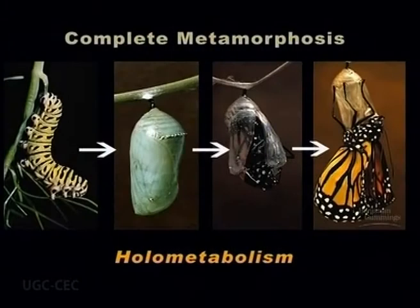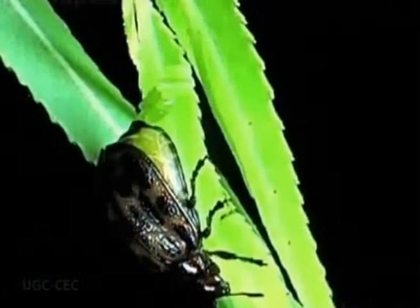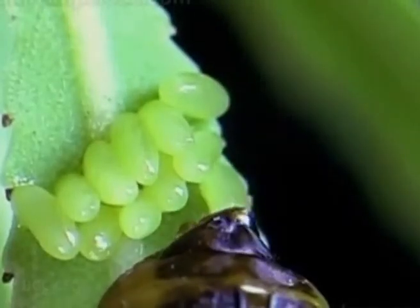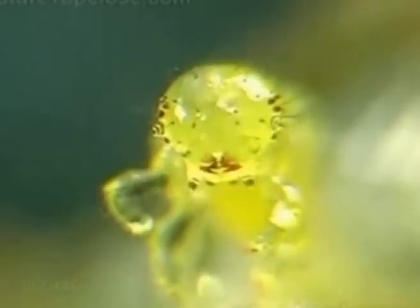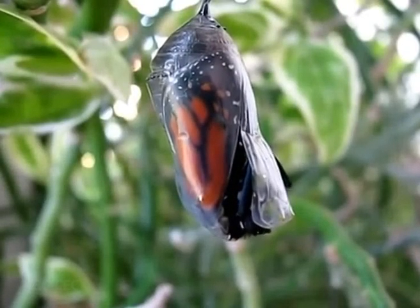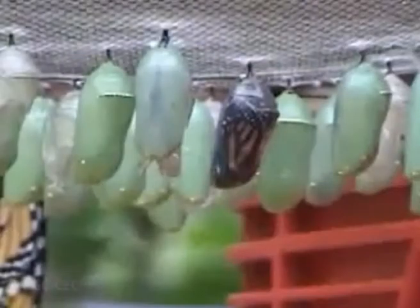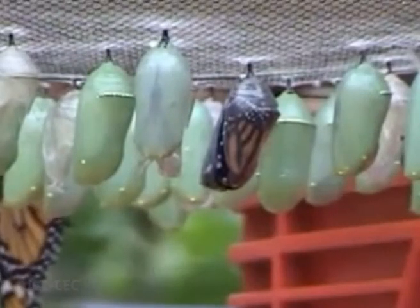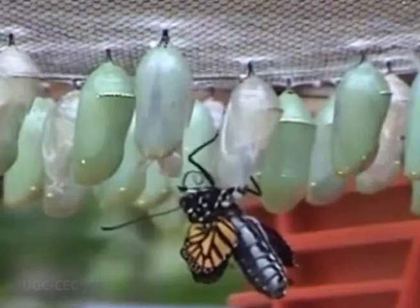Complete metamorphosis, or holometabolism. When insects grow they change how they look. Insects that have complete metamorphosis have four different life stages. These insects start as eggs, which are very small. The egg hatches and a larva comes out. The larva looks like a worm and eats and eats so that it can grow much bigger. When the larva has grown, it changes into a pupa. The pupa usually cannot move or eat. The pupa is a special time when the insect is changing into an adult that will look very different from the larva or the pupa. Most pupae are inside cocoons. When the pupa opens, the adult insect comes out.